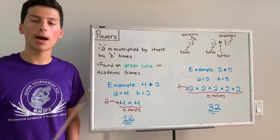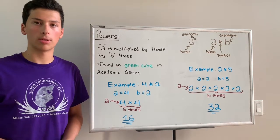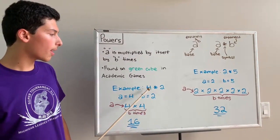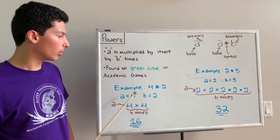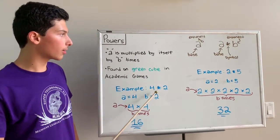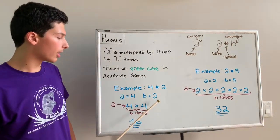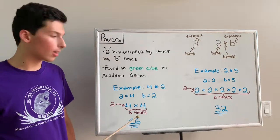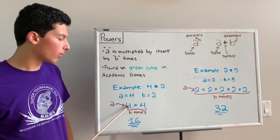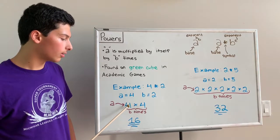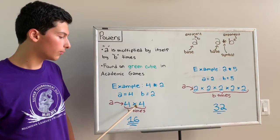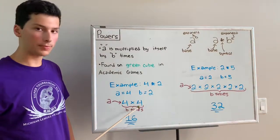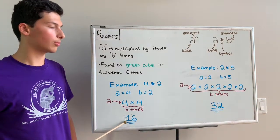In academic games, power is found on the green cube. Looking at this first example, 4 to the power of 2: a is 4, the base, and b is 2, which is the exponent. So we take the base and multiply it by itself b number of times. We take 4 and multiply it by itself, getting two 4s because the exponent is 2. So 4 times 4 is 16, and 16 is the answer.